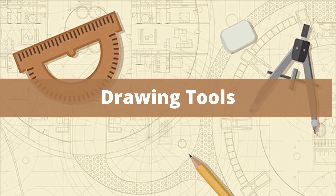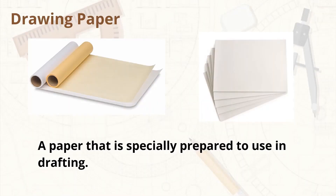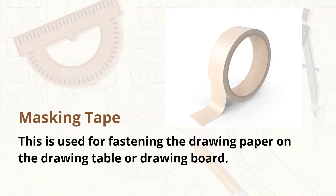Under the drawing tools are: Drawing paper — a paper that is specially prepared for use in drafting. There are different varieties of drawing paper, but Oslo paper is commonly used and bond paper is also recommended. Masking tape is used for fastening the drawing on the drawing table or drawing board. It is preferable to other types of tape because it does not damage the board and will not damage the paper if removed by pulling it off.